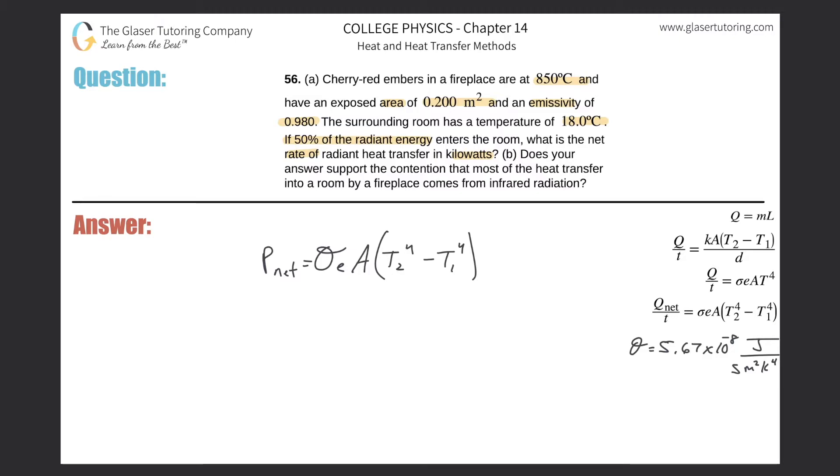Alright, so why don't we just forget about the 50% mumbo jumbo for right now. Let's just calculate the total amount of net power. So P net will be equal to the Stefan-Boltzmann constant. Here it is on the right hand side. You got to memorize it or you might be given it. 5.67 times 10 to the negative eight.